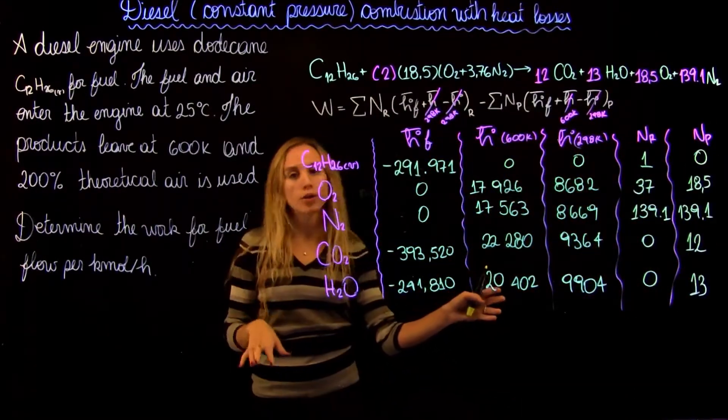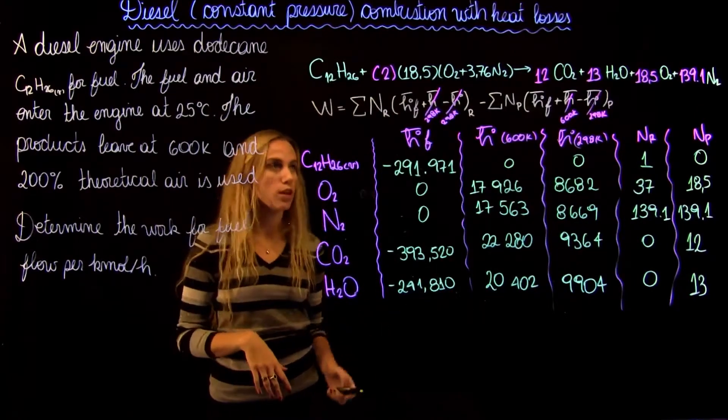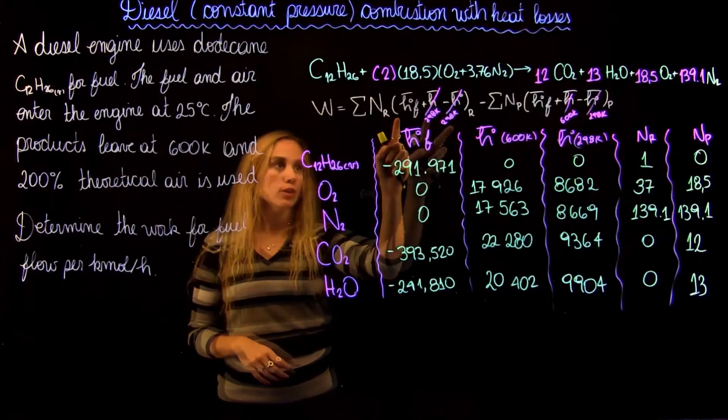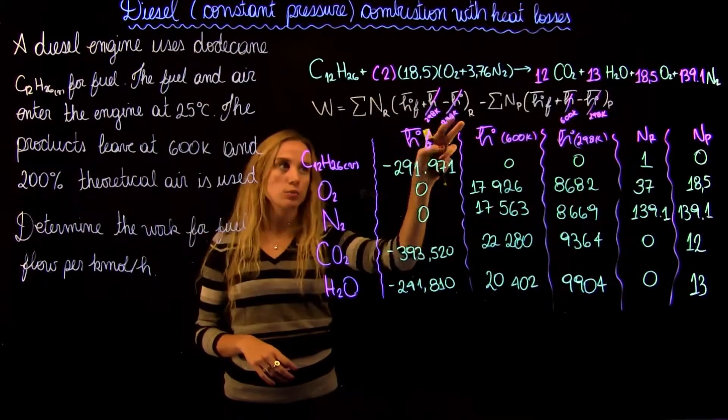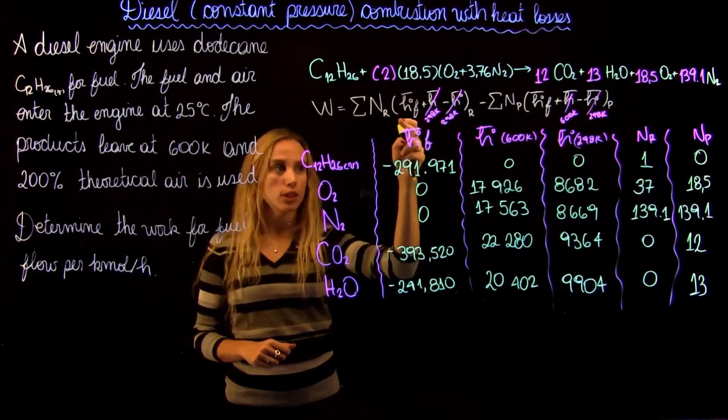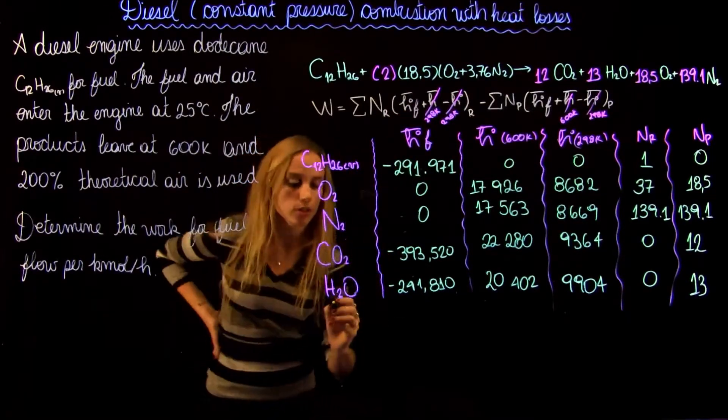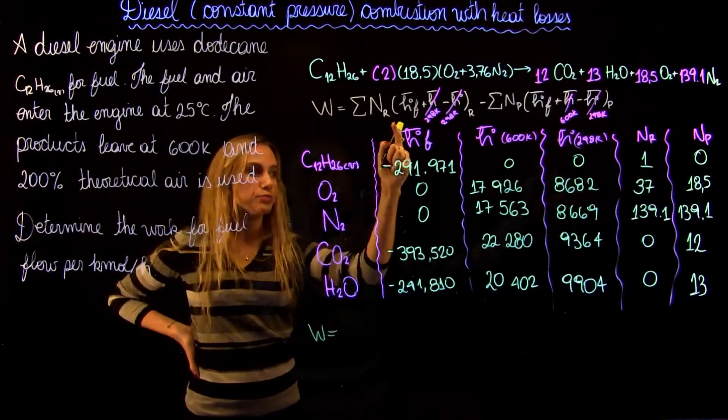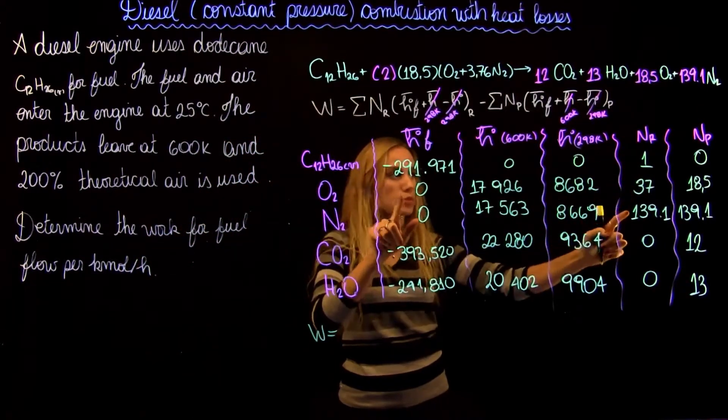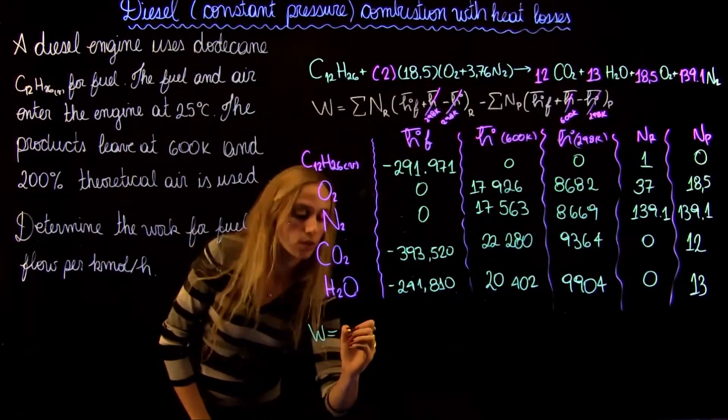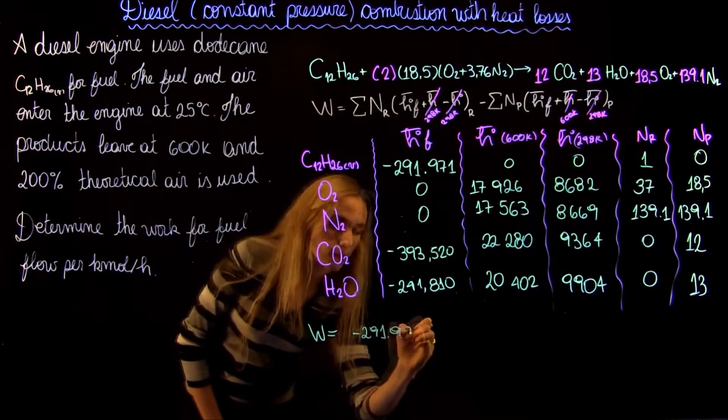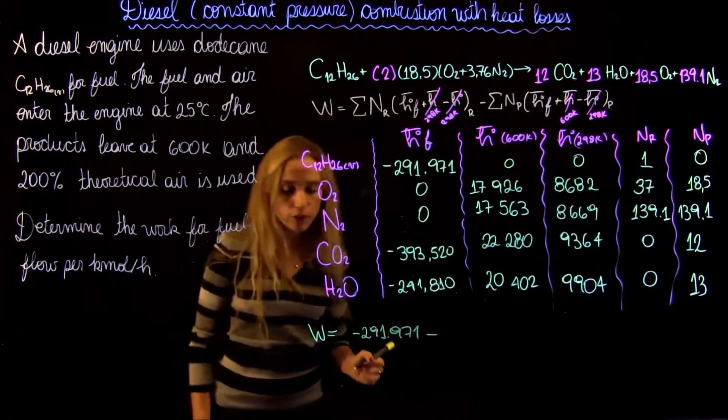So now that we have all the numbers that we found on the tables, we can just go back in our question and plug in the numbers. As I said before, the reference and the reaction temperatures are the same for reactants, so we're only going to look for the enthalpy of formation. And therefore the work is going to equal plus 291.971 kJ.